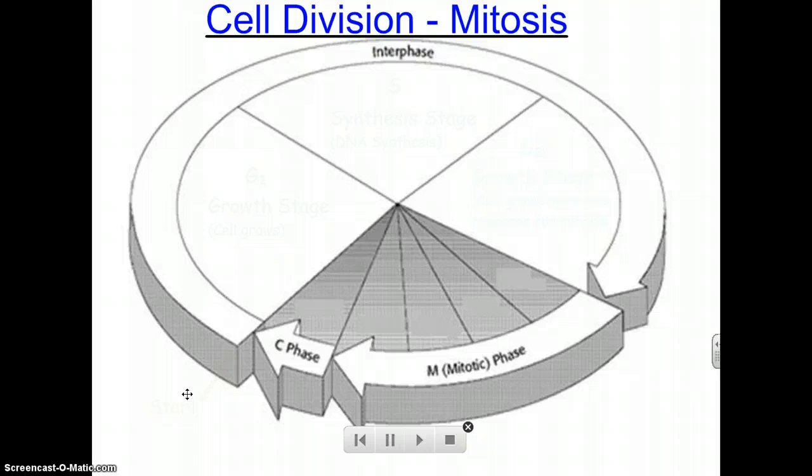Now, how long a cell stays in interphase depends on the type of cell it is. All cells go through interphase, but not the same amount of time. Nerve cells, for example, stay in interphase for almost their entire lifetime. Skin cells spend a very short amount of time in interphase, maybe a few days tops.